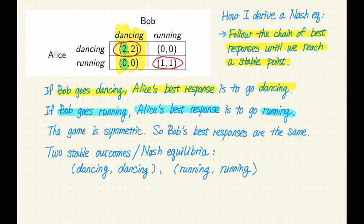Dancing is the best response to dancing, and running is the best response to running. So this leads us to our conclusion, which are there are two stable outcomes, and both of them are Nash equilibria of this game.